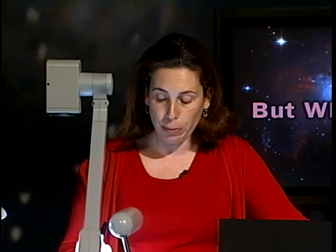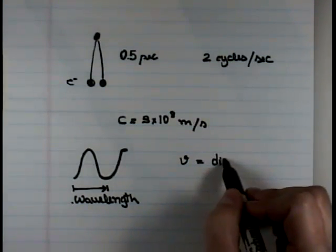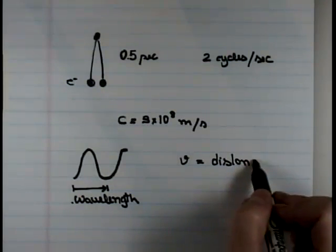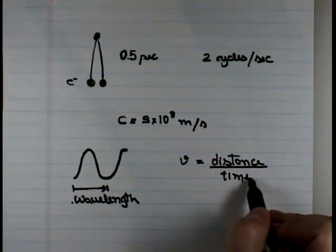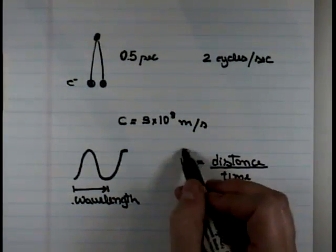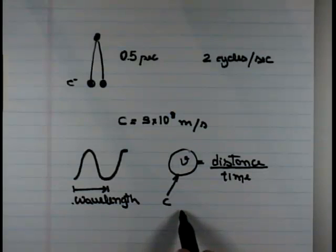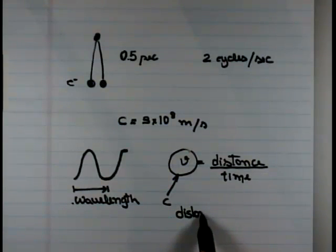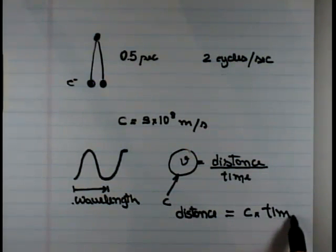And in order for you to make sure that you understand that, you need to remember that the velocity is distance traveled over time. In other words, if the velocity is constant equals c, you can say that the distance is c times the time. The time is the period. C is the speed of light. In this special distance, we call the wavelength.